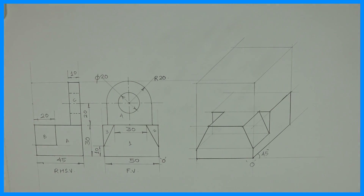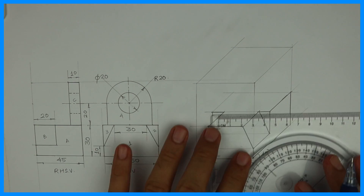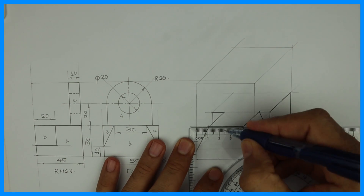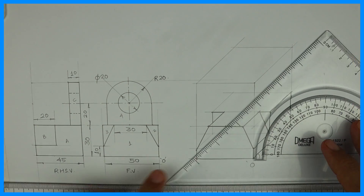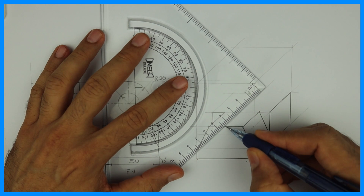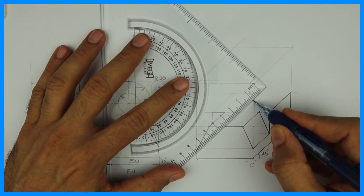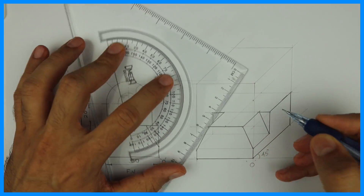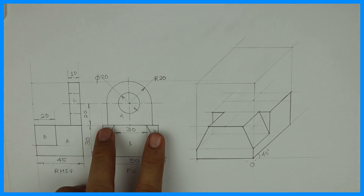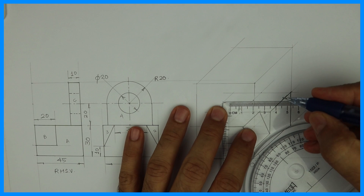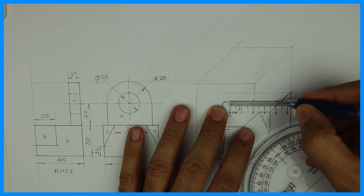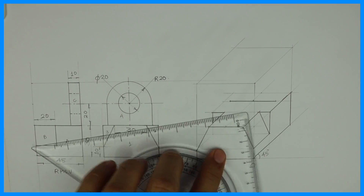Now there is part 4. Part 4 is C inside. The dimension is 45 minus 10, which is 35, and this is 40. We will mark the center point and take it behind by 35 — total is 45. From the center, we mark 20 and 20, which is 40. Then we go up by 20 also.